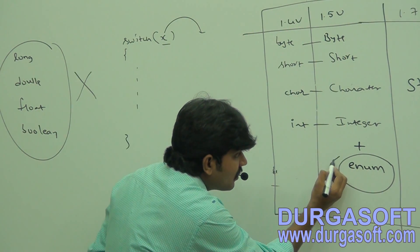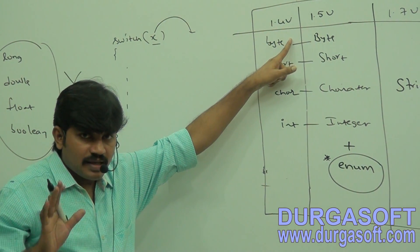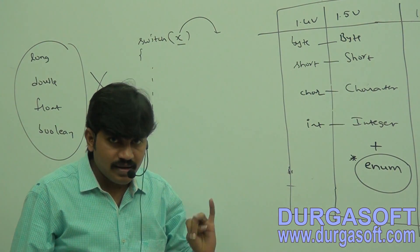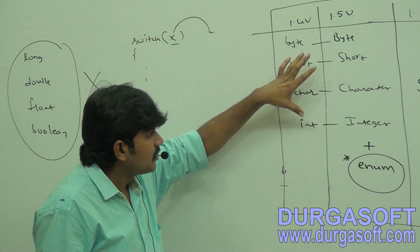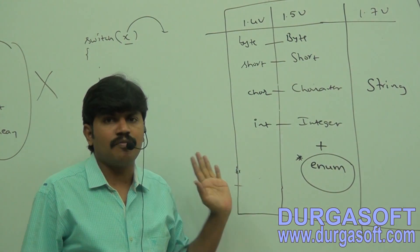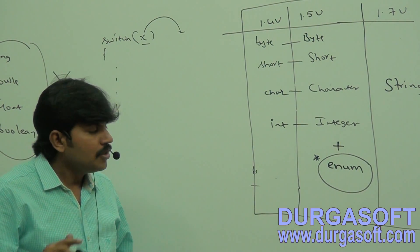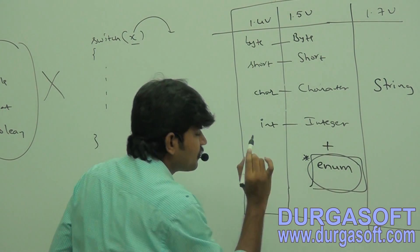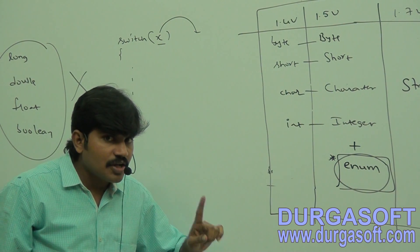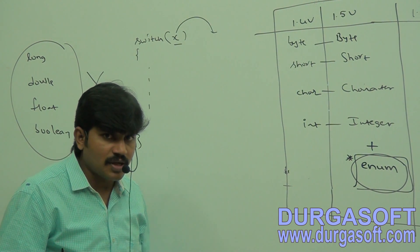My concentration here is on this part: until 1.4 version, the allowed argument types for the switch statement are byte, short, char, and int. From 1.5 version onwards, the corresponding wrapper classes and enum type are also allowed. From 1.7 version onwards, we can also pass string type. So from 1.5 version onwards, we can pass enum type as argument to switch statement — there is no problem at all.